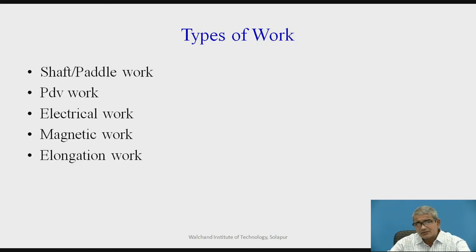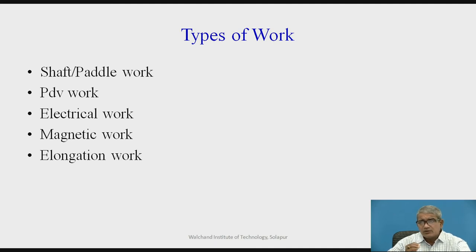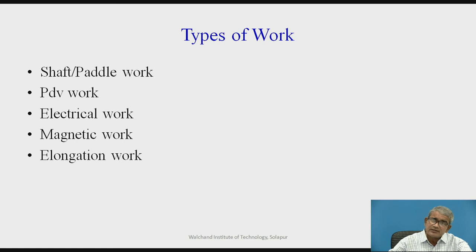What are the different types of work? The first is shaft work and paddle work. In your bicycle, motion is transmitted from the sprocket and chain arrangement. You have to supply work — by your foot arrangement you transmit work to that system and the bicycle starts running. That is one type of work. Then PdV work: a piston-cylinder arrangement with gas or working substance inside. We add heat, expansion of the gas occurs, and the piston moves from level 1 to level 2. Work is done as it moves from level 1 to level 2. That is one type of work.